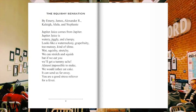Our final ode is the Squishy Sensation. Jupiter Juice comes from Jupiter. Jupiter Juice is watery, jiggly, and clumpy. Looks like a watermelon-y, grape-fruity, tomato-y kind of slime. Wet, squishy, stretchy.